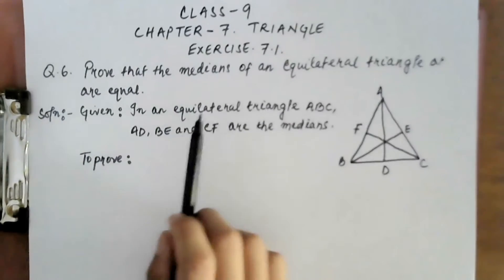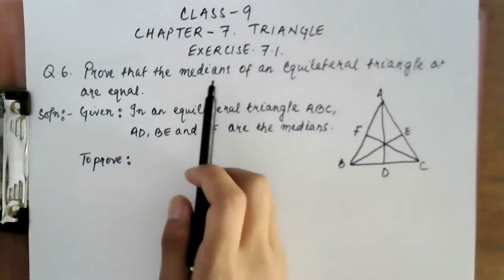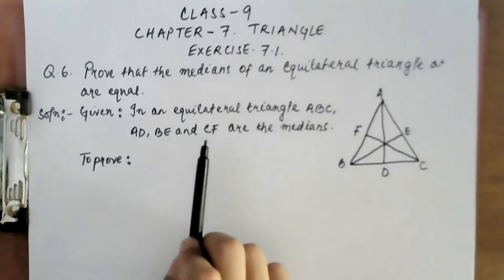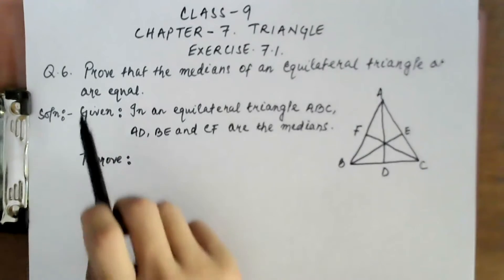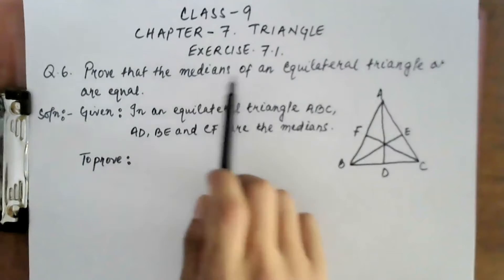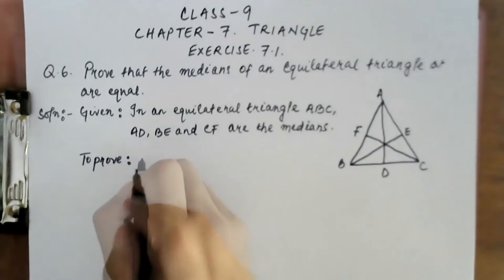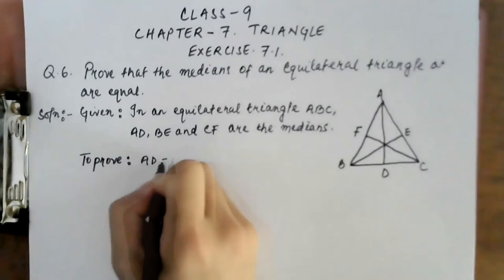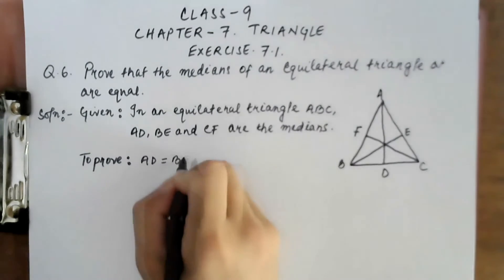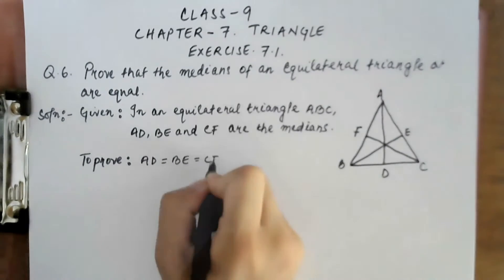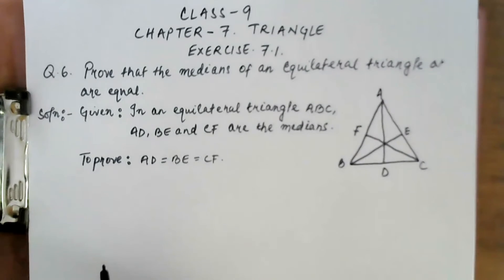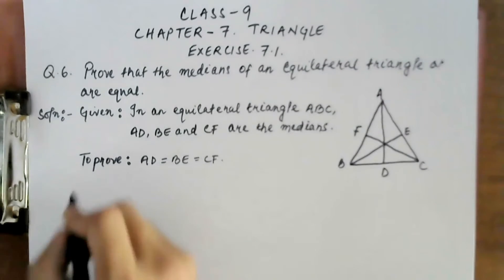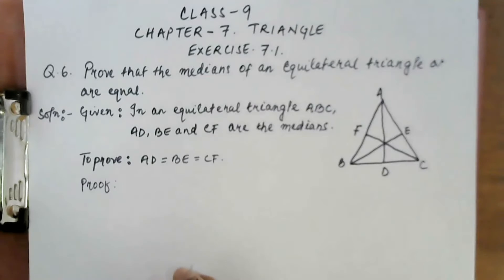The second step is 'To Prove' — what do we need to prove? The question asks us to prove that the medians AD, BE, and CF are equal. So we write: AD = BE = CF. There is no construction needed, so we go directly to the proof.